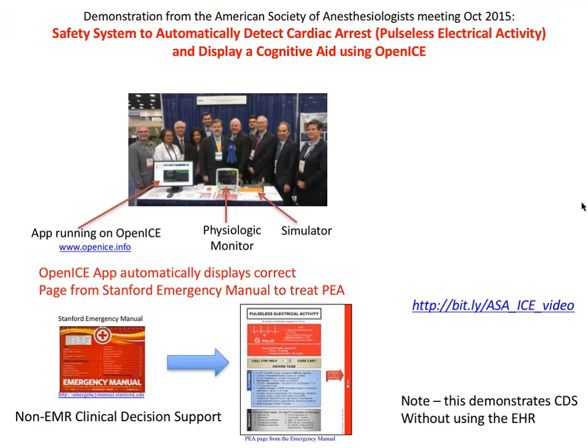An example of how to use OpenICE to improve safety is a demonstration we had at the American Society of Anesthesiologists in which we ran OpenICE to look at data in real time, detect a cardiac arrest, and then show information to help the clinician treat the patient. As a group, we didn't have to think and work on the specific treatment protocols — we simply linked to a widely accepted source, the Stanford Emergency Manual. By using apps running on OpenICE, we're able to enhance vigilance with continuous monitoring and no false alarms.